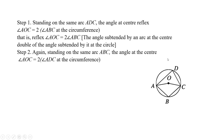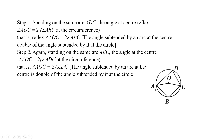Second step. Again, standing on the same arc ABC, the angle at the center AOC equals two times angle ADC at the circumference. That is, angle AOC equals two times angle ADC, for the same reason — the angle subtended by an arc at the center is double the angle subtended by it at the circle. Therefore, joining these two, we get reflex angle AOC plus angle AOC equals two times angle ABC plus angle ADC.